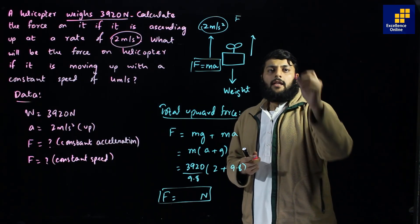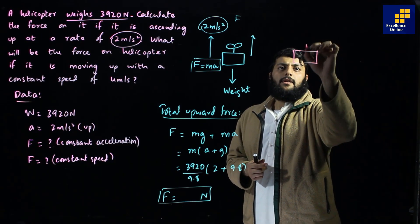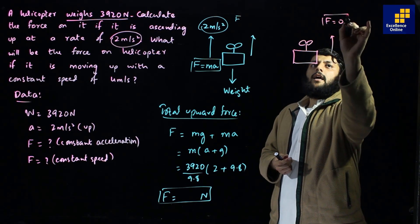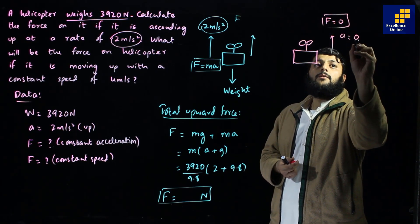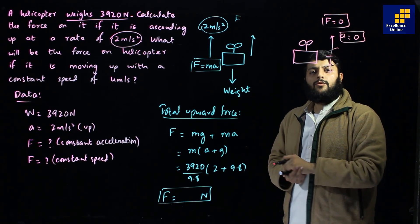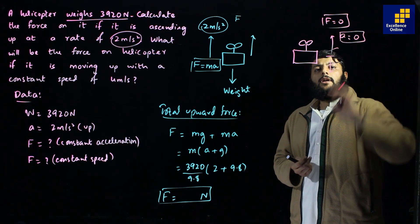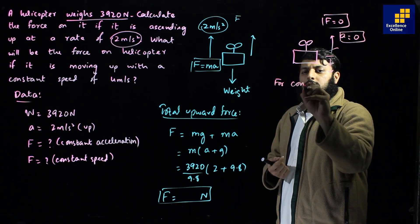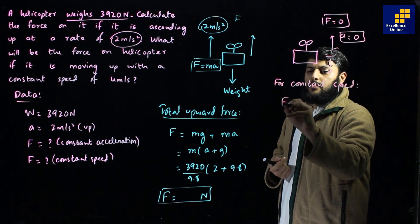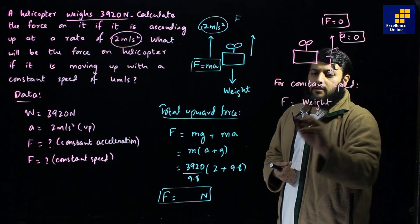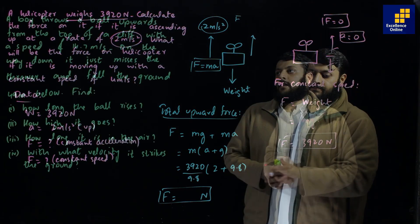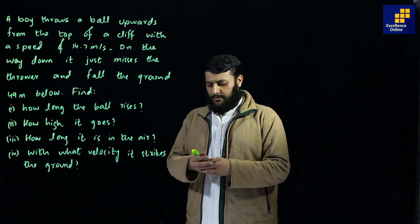For Part B, we calculate the force at constant speed. If the helicopter is moving upward at constant speed, acceleration is zero. If acceleration is zero, there is no net force, so the upward force exactly equals the downward force. Therefore, force equals weight, which is mg = 3920 Newtons directly.